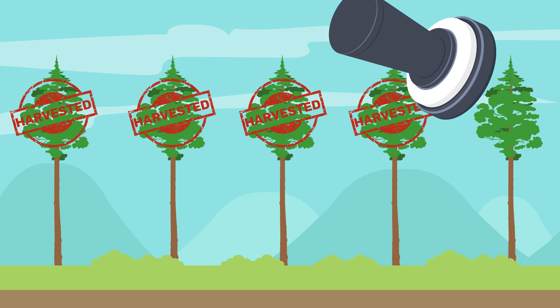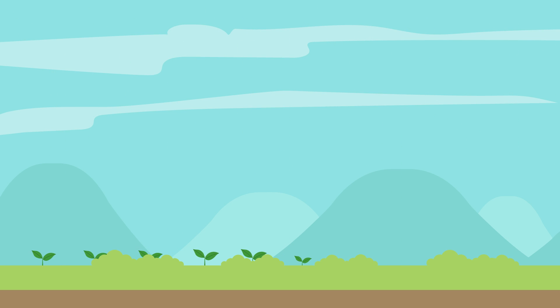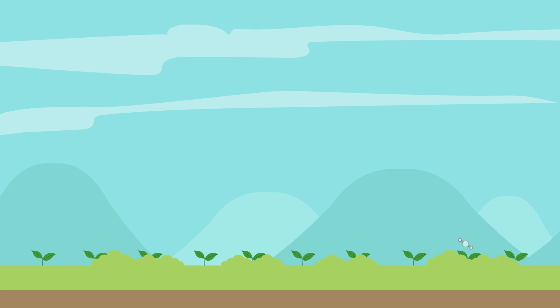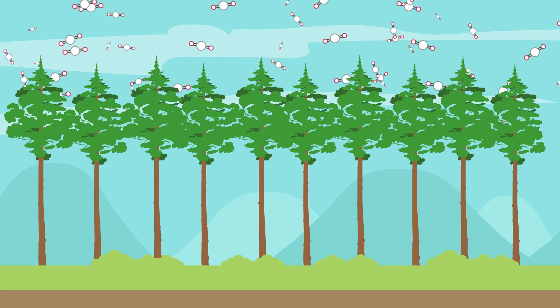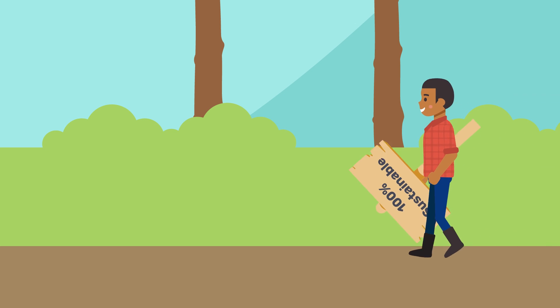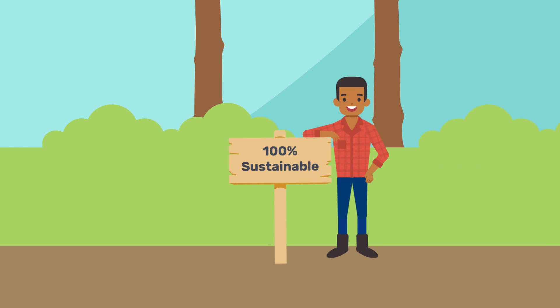We can harvest those trees at just the right time and plant a whole new generation of young trees to take their place and start the whole process over again. That's what we call sustainable forestry.